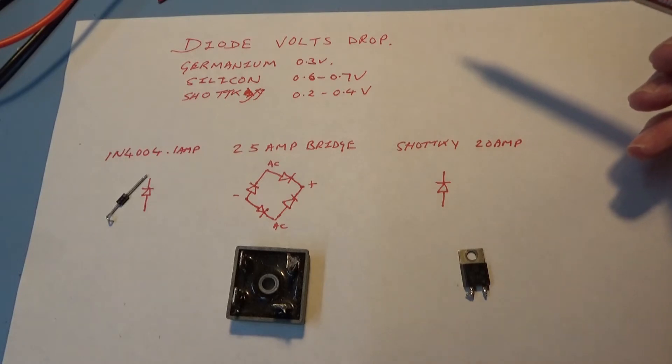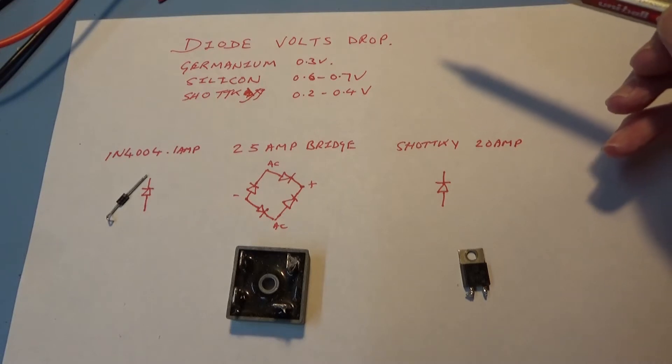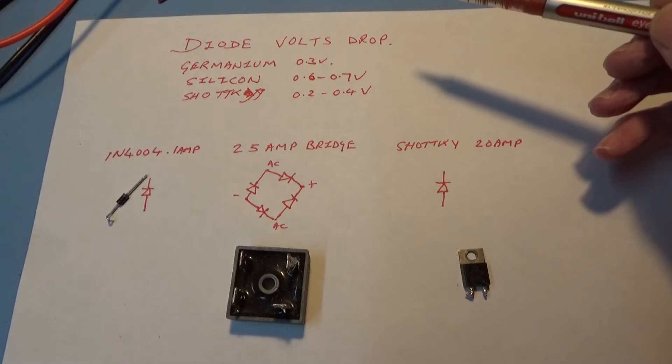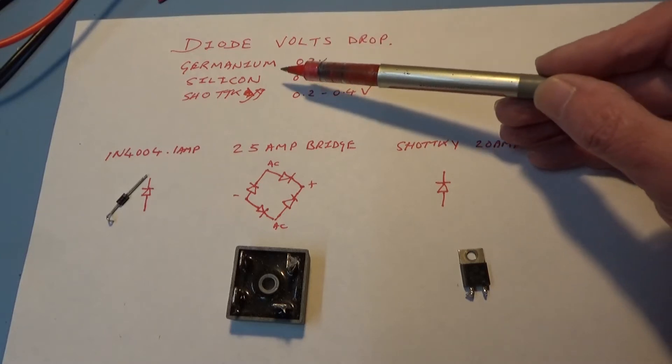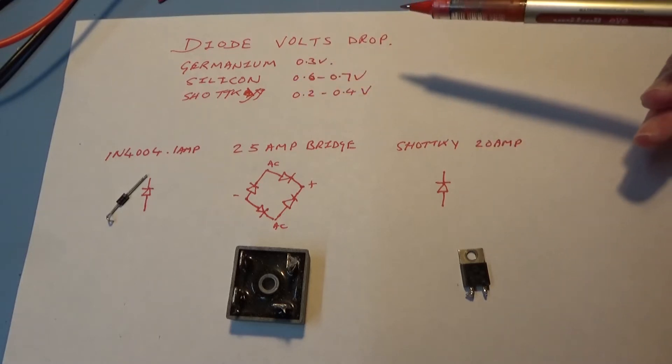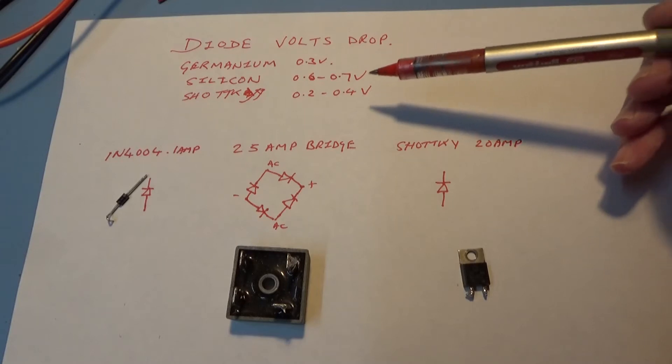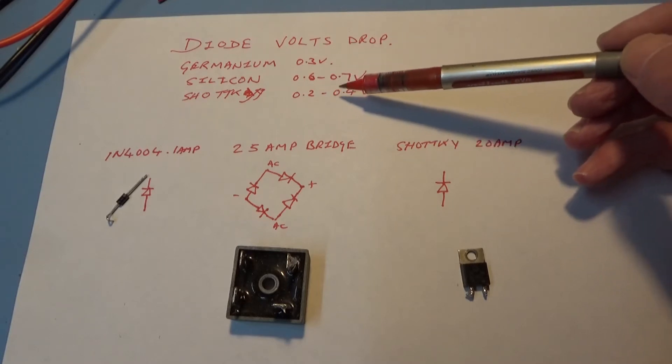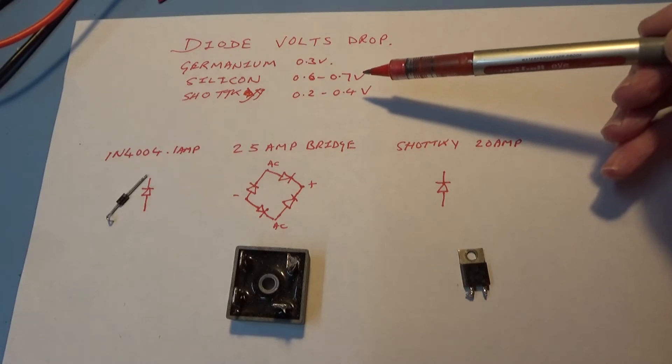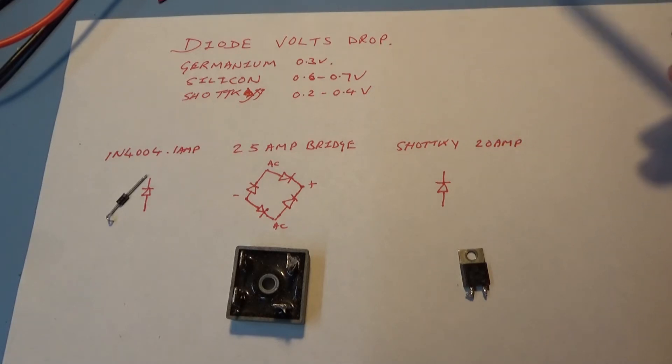These have become much more common nowadays with the advent of switch mode power supplies because they will work at much higher frequencies than silicon. Generally you can talk about 0.2 to 0.4 volts drop on a Schottky diode.